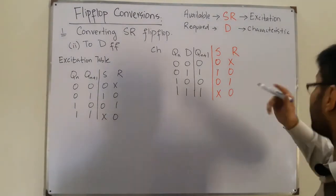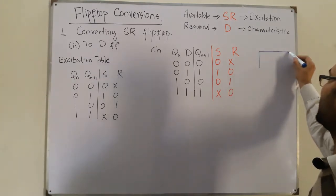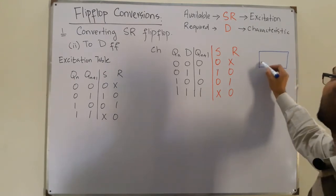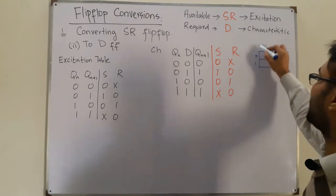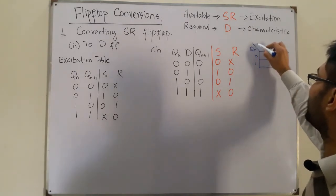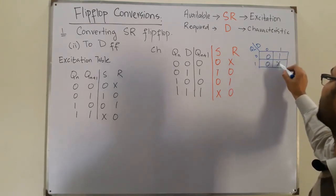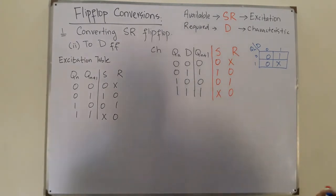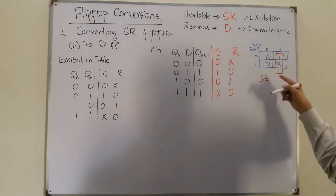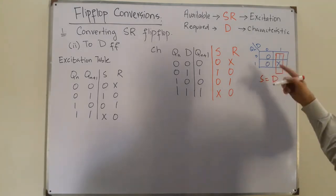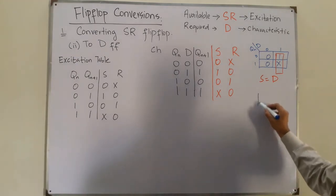By K-maps we do that. This is a four-cell map with Qn and D as the states. Filling in the values: 0, 1, 0, X. We can form a single group, and this group gives us S = D, because Qn is changing. For R, we have a similar four-cell map.